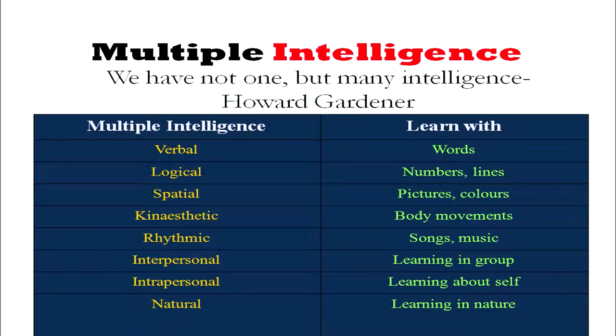So we have different types of intelligence. We have verbal intelligence, which is linked with words — this is what we learn in language basically. We have logical intelligence, linked to numbers and logic — that is basically mathematical intelligence. Then we have spatial intelligence, which is pictorial intelligence related to pictures and colors. Then we have kinesthetic intelligence, which is related to body movements. Then we have rhythmic intelligence — people who are good at music or songs have better rhythmic intelligence. Then we have interpersonal intelligence.